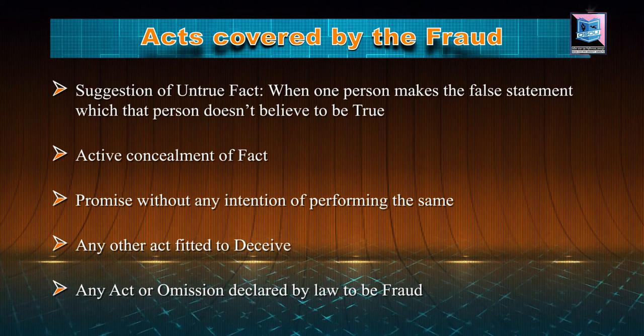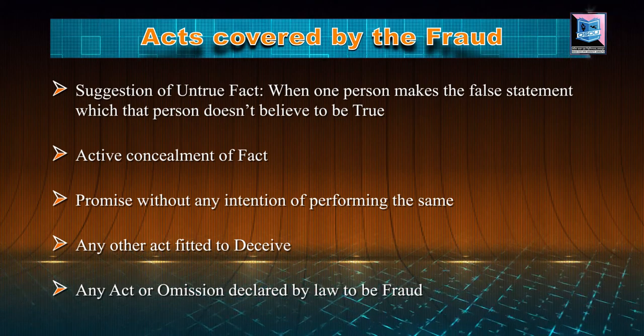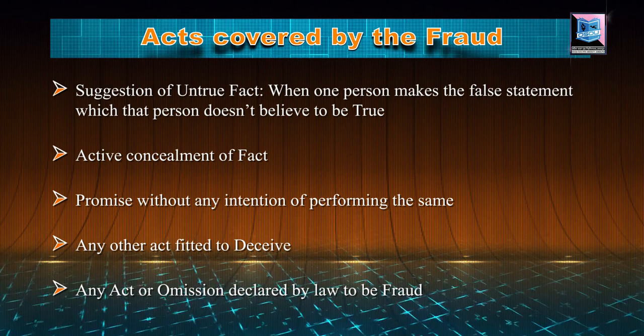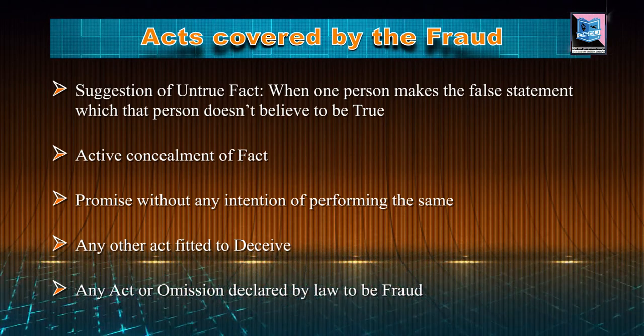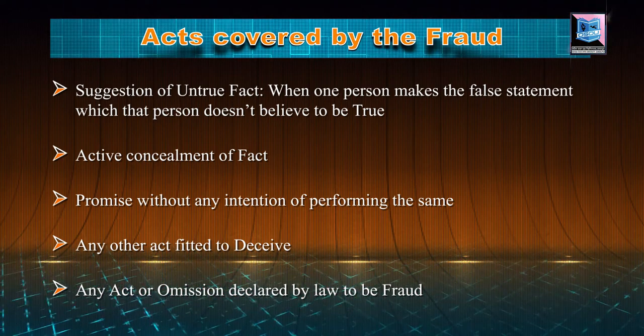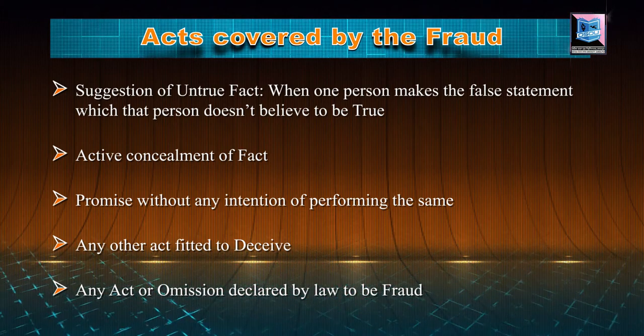The second act covered by fraud is active concealment of fact. In several cases, the seller is responsible to inform the buyer about the defects in the goods, and when the seller conceals the same, it amounts to fraud. Active concealment of fact comes into the picture when there is a relation of utmost good faith between the parties. Otherwise also, when the fact is required to be disclosed in regard to a particular contract, the active concealment of fact is an important criteria to determine whether it is fraud or not. The next is the promise without any intention of performing the same — when a person is making a promise but definitely is not having any intention to perform it, the person has committed fraud. Any other act fitted to deceive is also covered.